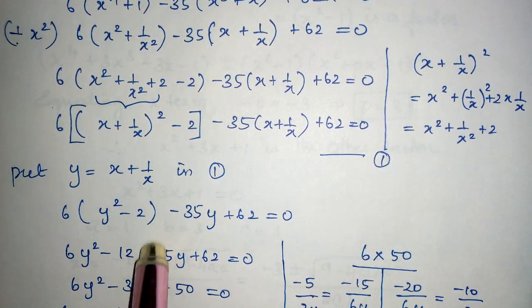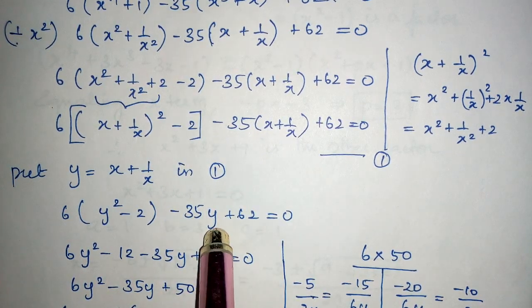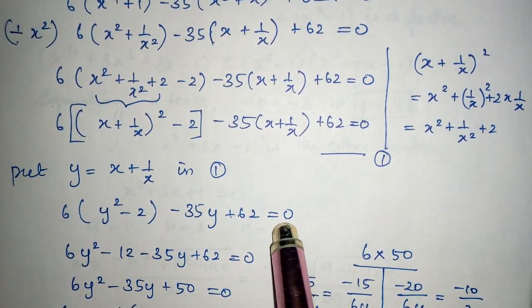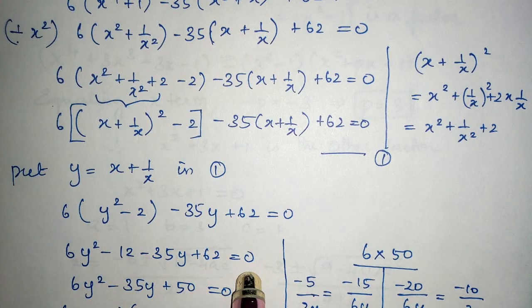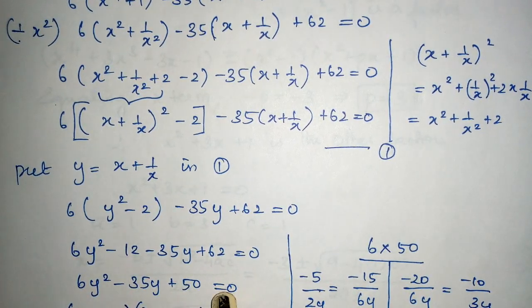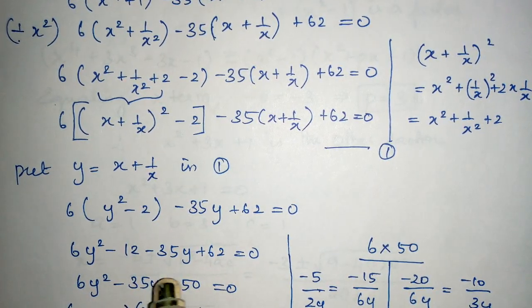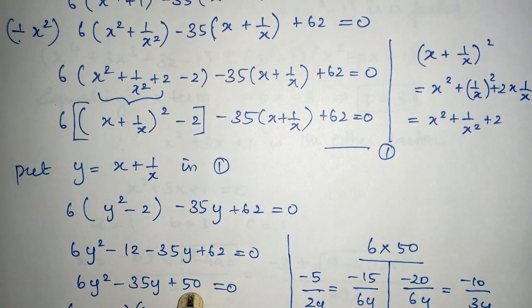6(y² - 2) - 35y + 62 = 0. Now take this 6 inside. The equation is expanded. Now this looks like a quadratic equation.